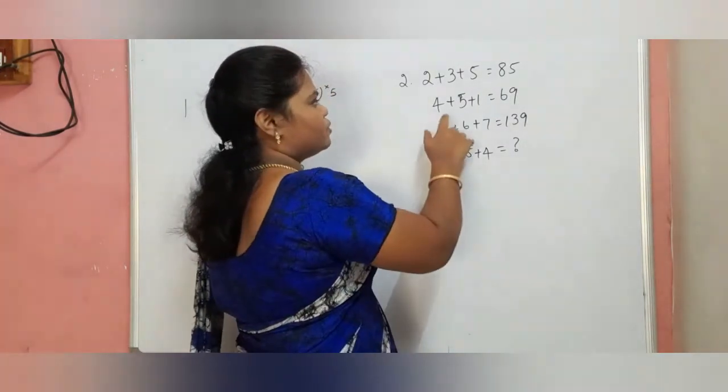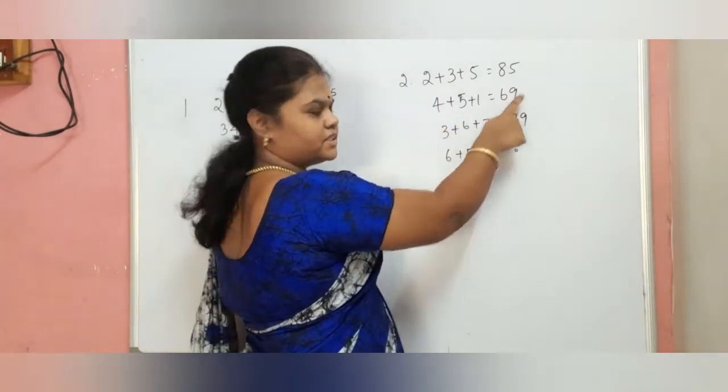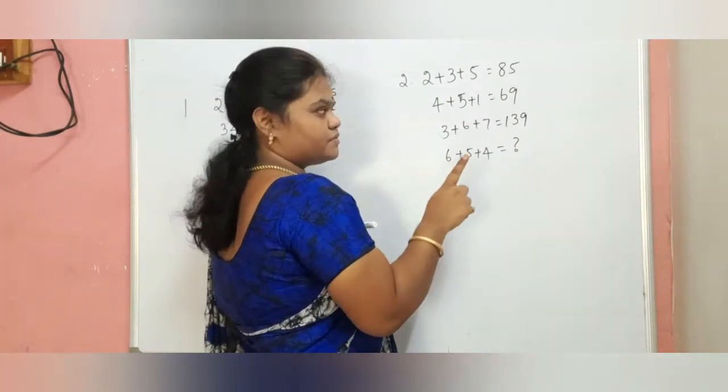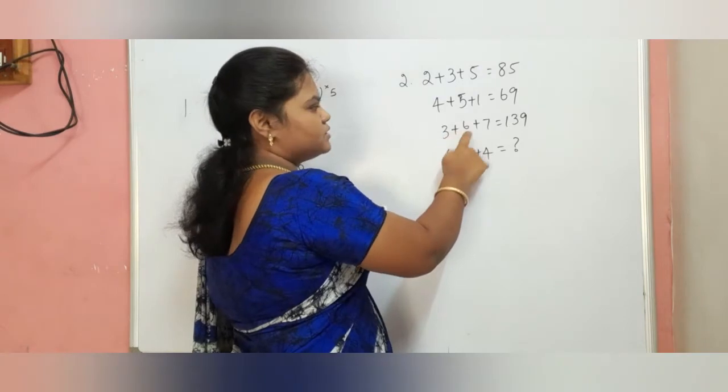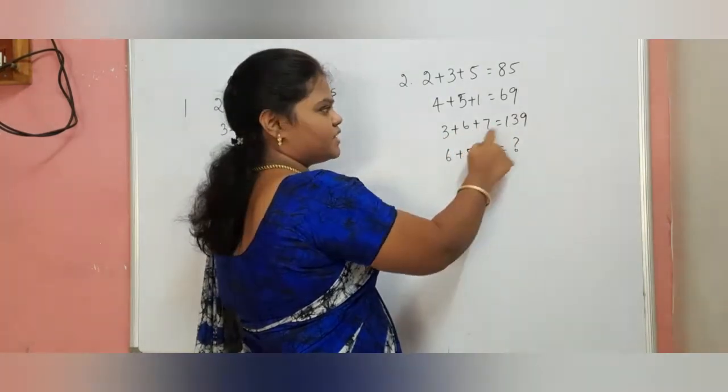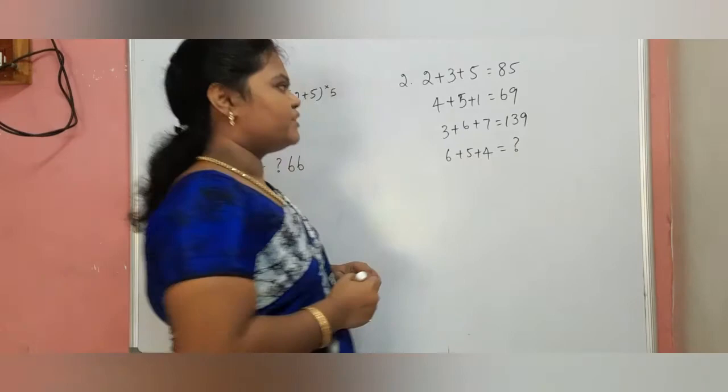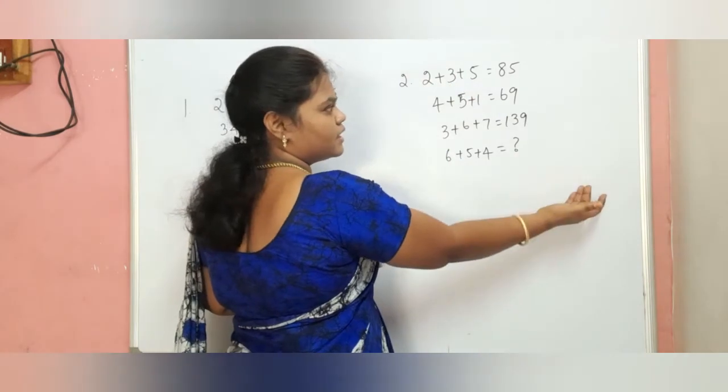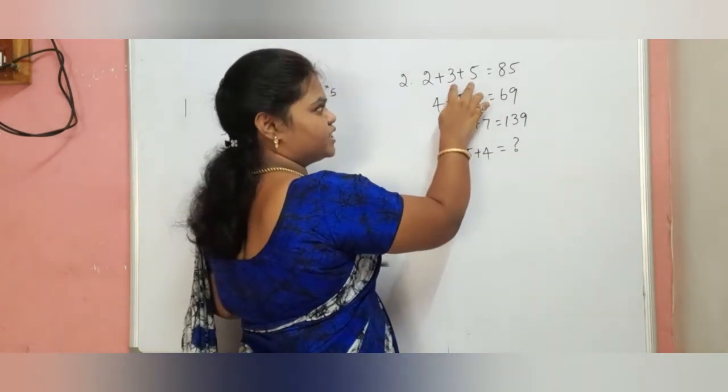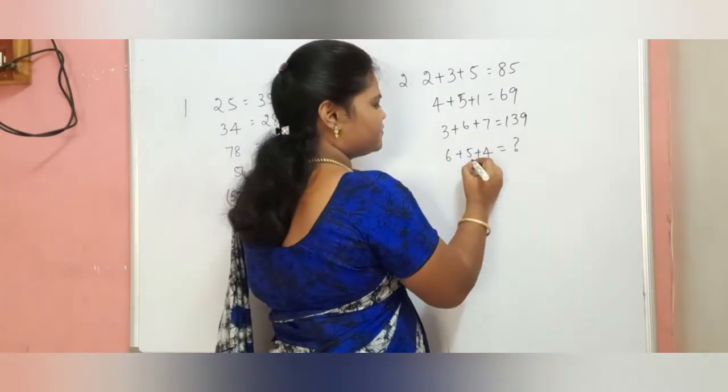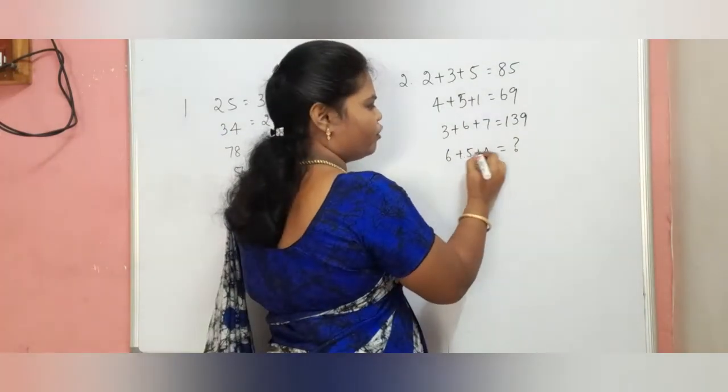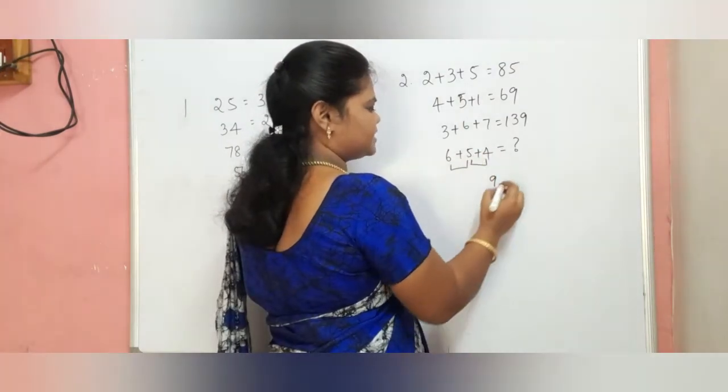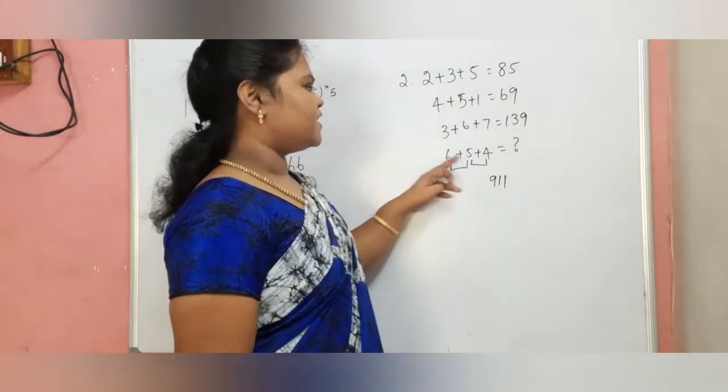3 plus 5 equals 8, 5 plus 1 equals 6. 4 plus 5 equals 9, 5 plus 6 equals 11. Here we go, first 2 numbers addition.